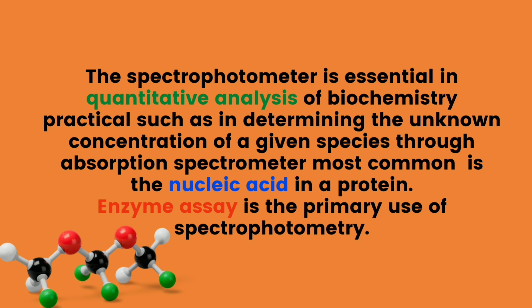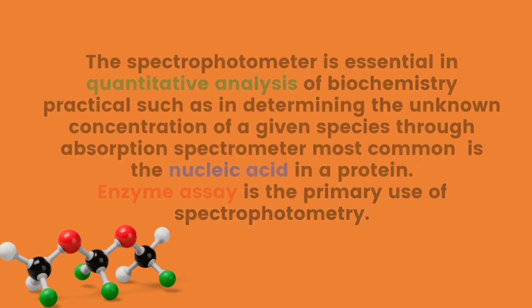The spectrophotometer is essential in quantitative analysis of biochemistry practicals, such as determining an unknown concentration of a given species through absorption spectrometry, for example, nucleic acid in a protein. Enzyme assay is the primary use of spectrophotometer to check the enzymatic activity.